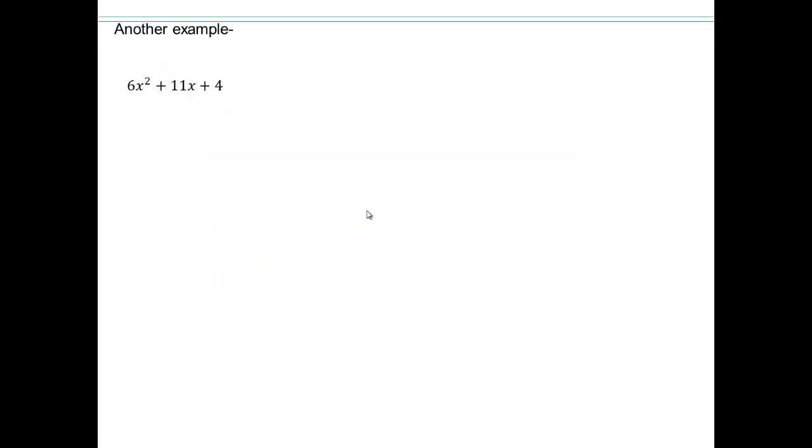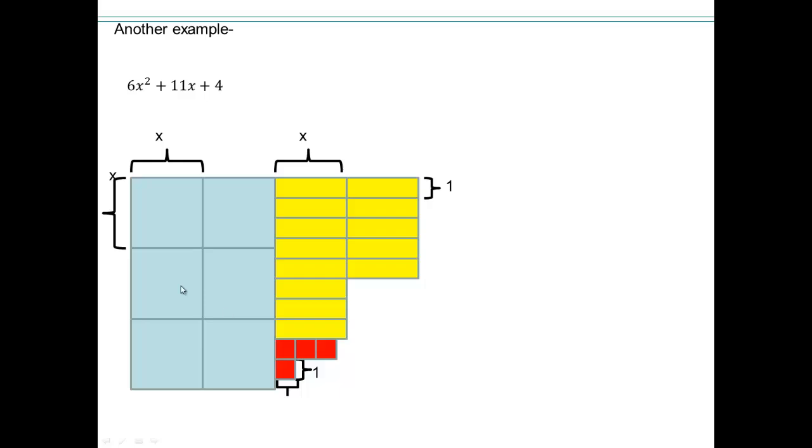All right, let's take a look at another example of factor by grouping: 6x² + 11x + 4. So we have 6x², 11 of these, and 4 of those. Go ahead and try that on your own. Pause the video and try it on your own. See if it works.